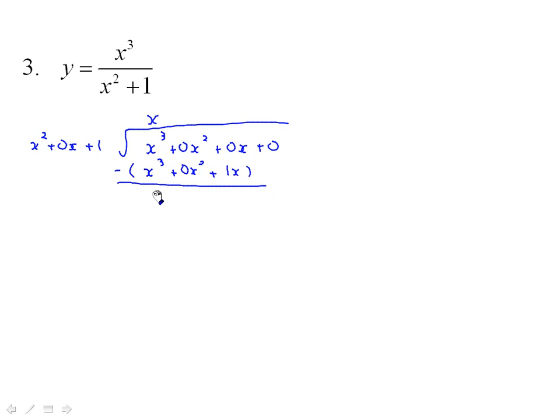And then subtract. So x cubed minus x cubed is 0. 0 minus 0 is 0. 0 minus 1x is negative 1x. And then plus 0, if you want to bring that one down. And you can see now that we don't even have a remaining term to divide into.